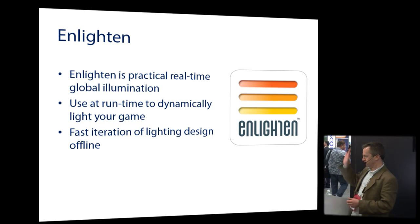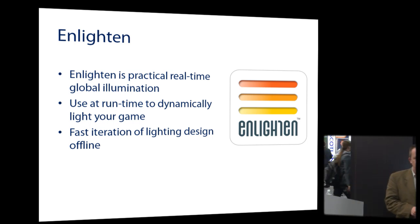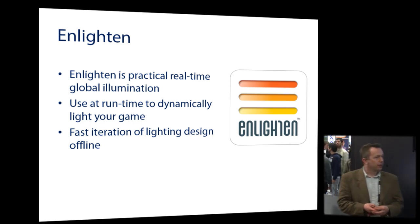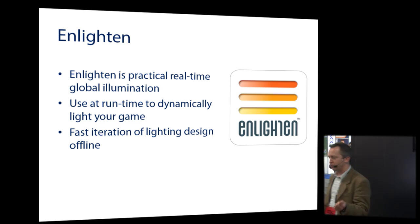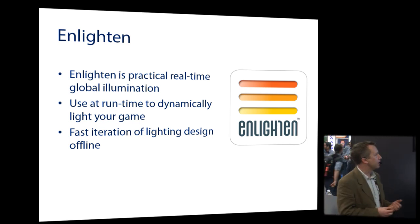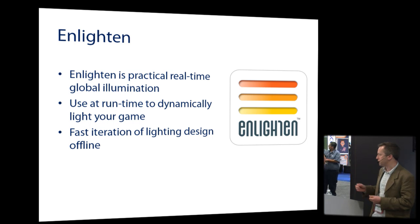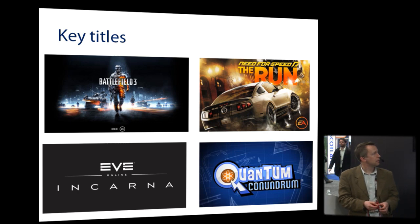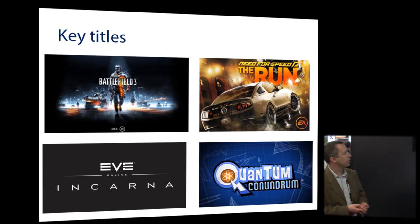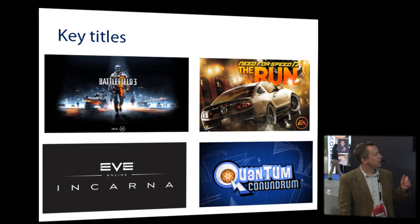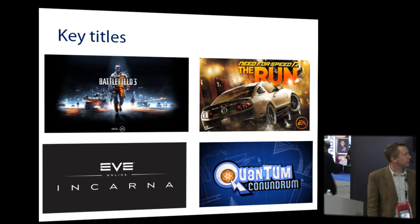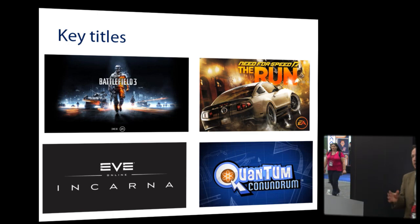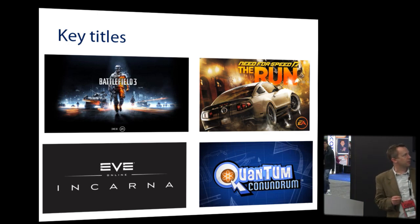What is Enlighten? Enlighten is real-time global illumination — all of the bounce light in the world is computed in real-time on today's consoles and PCs. You can use it dynamically in the game to create interesting effects when you shoot out lights or explore with a torch, with all the bounce lighting updating correctly. It also dramatically improves iteration time and makes the artist's life a lot easier. Big titles built using Enlighten include Battlefield 3 and Need for Speed in the Frostbite engine, an update to EVE Online, and a new title called Quantum Conundrum.